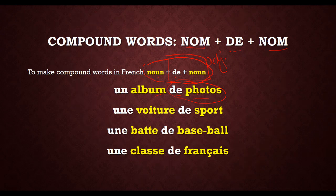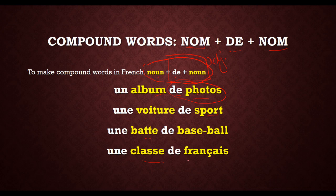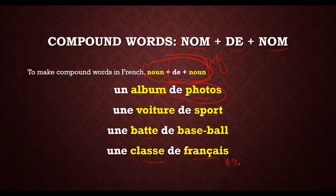A baseball bat is une batte de baseball. A French class is une classe de français — because 'French' here refers to the language, which is a noun, not an adjective. If you said une classe française, that would mean the class is literally French, which doesn't make sense. So it's une classe de français — the class of the French language.